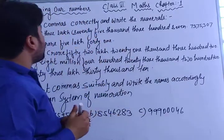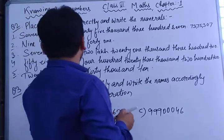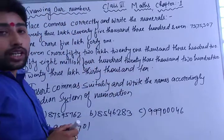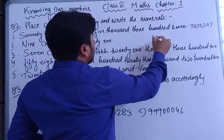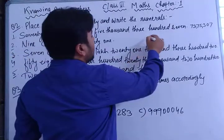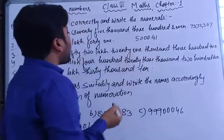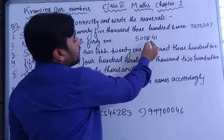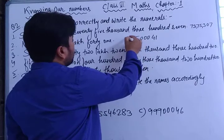The second part is nine crore five lakh forty-one. First write forty-one, then five lakh — you need units, tens, hundred, thousand, ten thousand, lakh — so five lakh forty-one. Then write nine crore, placing it in the tens, hundred, thousand, ten thousand, lakh, ten lakh positions. So nine crore five lakh forty-one.